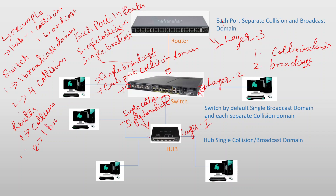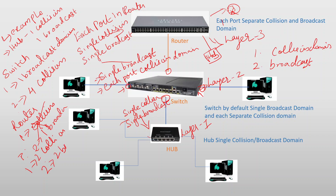Single broadcast domain. Now, if you look at the router — a PC, a router, a hub, a hub — if you look at the hub, we have two collision domains, two broadcast domains. So now we are going to identify the collision domain and broadcast domain in hub, switch, and router.